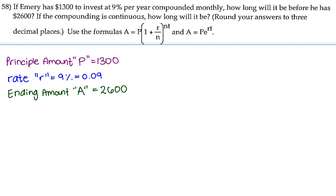In this case, it's going to be monthly. So there are 12 months in a year, so it's going to be compounded 12 times in a year. So our n is going to be 12.